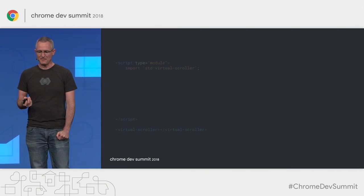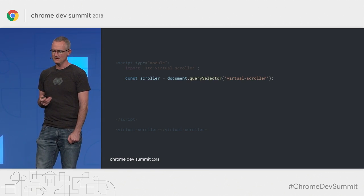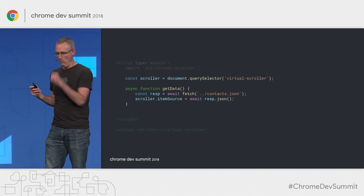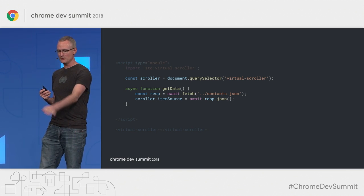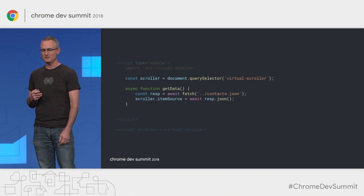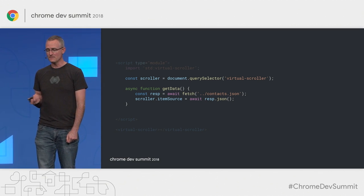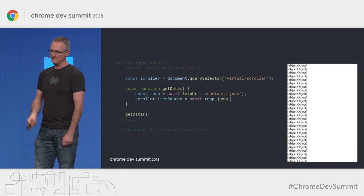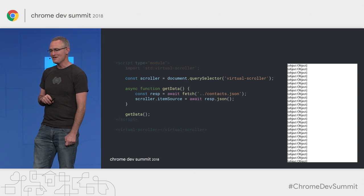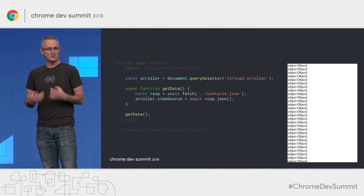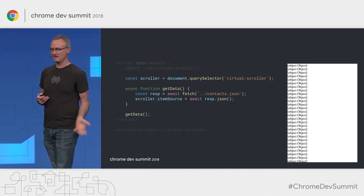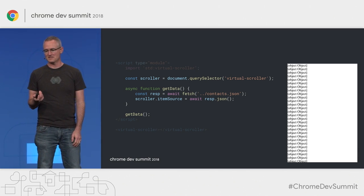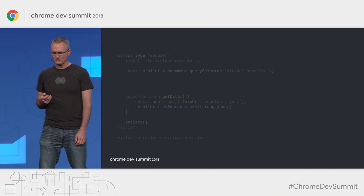Once we've imported it, we just put the virtual scroller tag in our HTML document. You can see the virtual scroller has a default size, much like an iframe. Then a quick query selector to find it, we fetch some data, and here's the first bit of virtual scroller API: itemSource, which you can assign an ordinary array. By default it takes the item and tries to render it, but if it's a string it doesn't look great. So we use the updateElement hook to take the contact name and put it in the text content — just a few lines of vanilla HTML and JavaScript, and we have a virtual scroller.